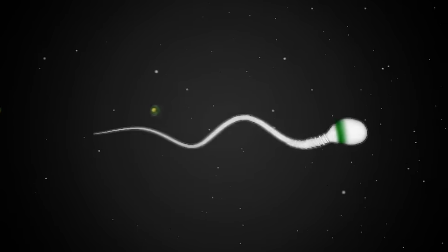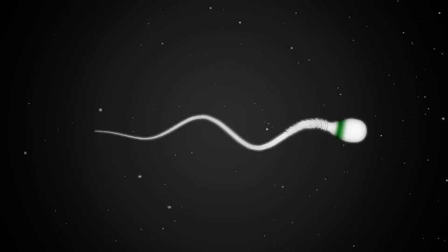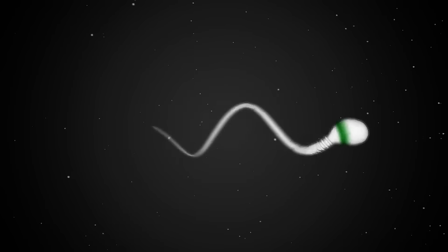During capacitation, both the tail and head of the sperm undergo important changes. The tail takes on a hyperactivated pattern of swimming.